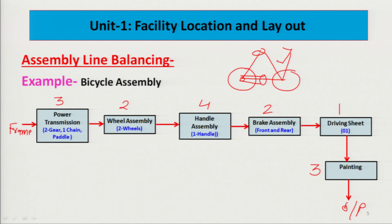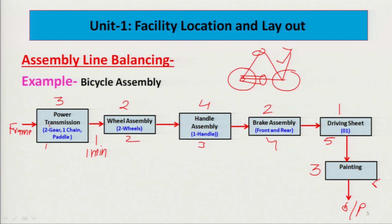Work station one completes in 3 minutes, but work station two only takes 2 minutes. So work station two has to wait 1 minute for the product. This means the labor and machines at work station two are idle for 1 minute per cycle — that cost is being lost. Similarly, after work station two finishes in 2 minutes, work station three takes 4 minutes, creating a 2-minute waiting time for the product to accumulate.